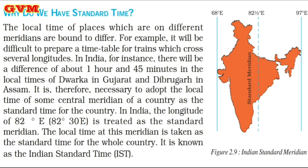In India, the longitude of 82 degrees East is treated as the standard meridian. The local time at this meridian is taken as the standard time for the whole country. It is known as the Indian Standard Time, or IST.